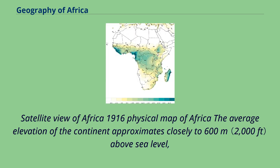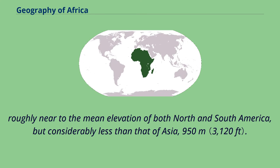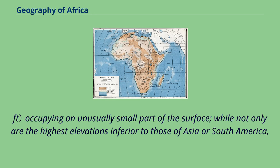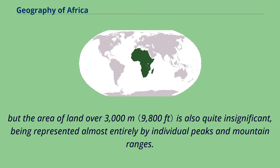The average elevation of the continent approximates closely to 600 meters above sea level — roughly near the mean elevation of both North and South America, but considerably less than that of Asia at 950 meters. In contrast with other continents, it is marked by the comparatively small area of either very high or very low ground, while the area of land over 3,000 meters is also quite insignificant, being represented almost entirely by individual peaks and mountain ranges.